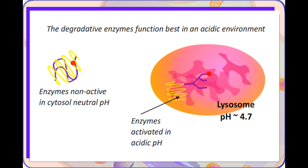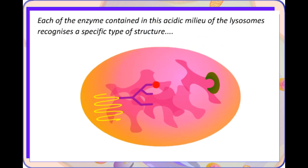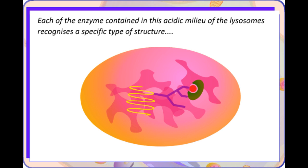The degradative enzymes function best in an acidic environment and the interior of lysosomes has a pH averaging around 4.5 to 4.7. Each of the enzymes contained in this acidic milieu of the lysosome recognizes a specific type of structure that may occur in one type or class of material being degraded.